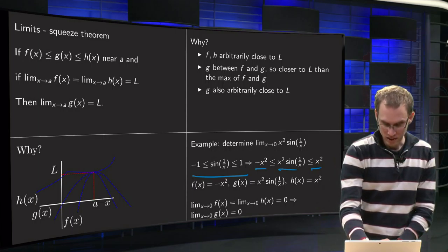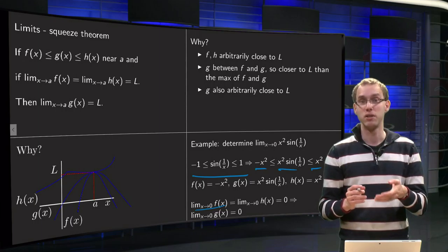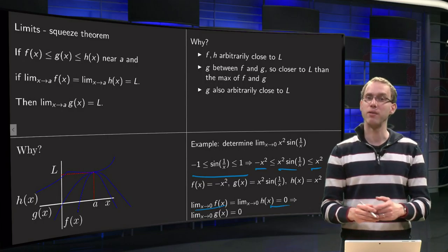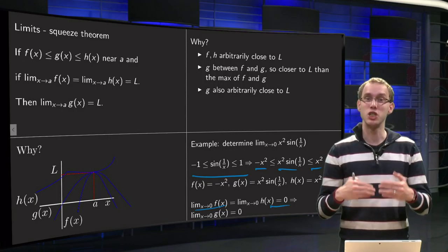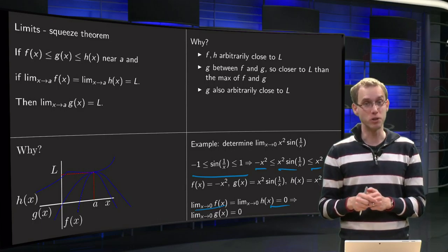Then we can take the limits. If you take limit as x approaches 0 of f(x), that's just 0, limit as x approaches 0 of h(x) also equals 0, and then we can conclude that g is squeezed in between f and h, so the limit as x approaches 0 of g also equals 0.